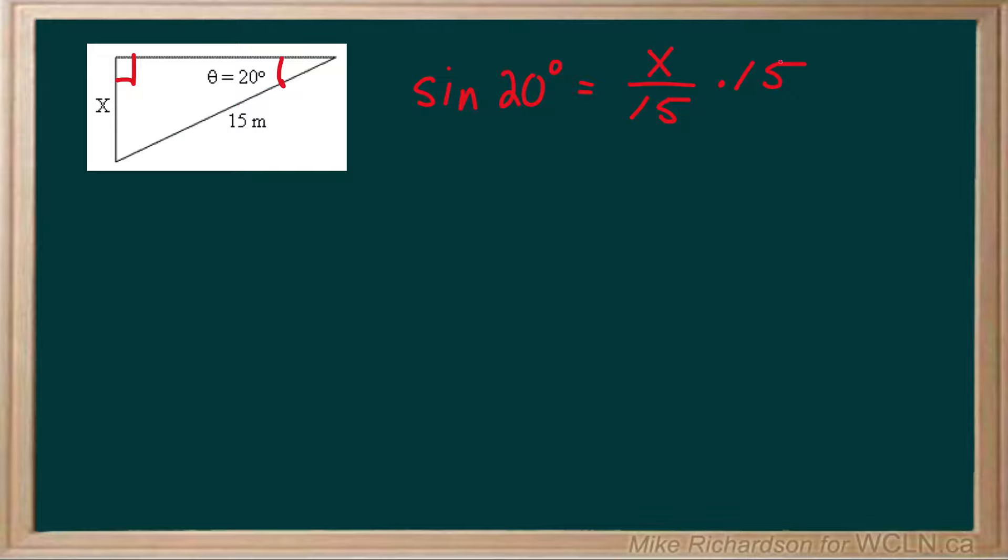So multiply both sides by 15 first, and we're done. 15 times sine 20 equals x. Put it through in your calculator, and you get x is 5.13 meters.